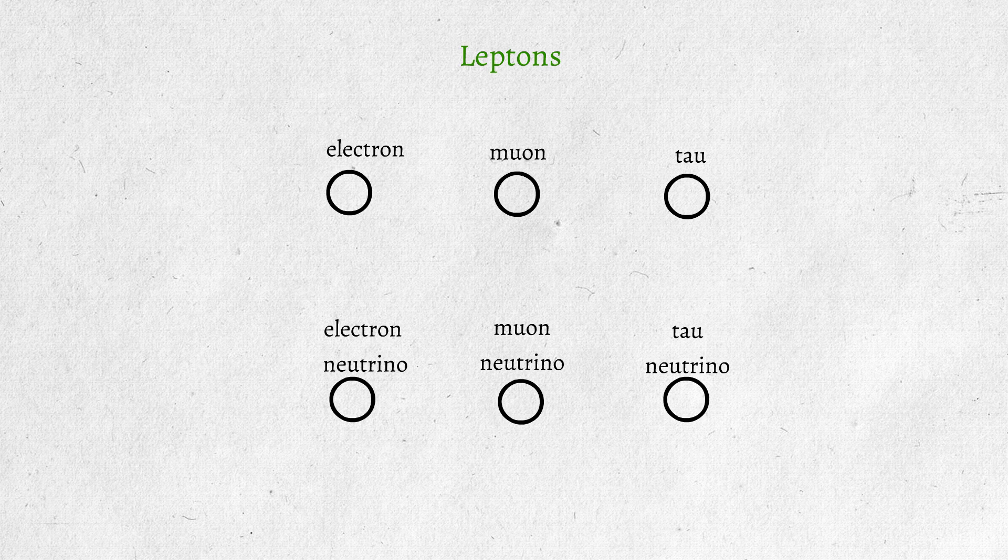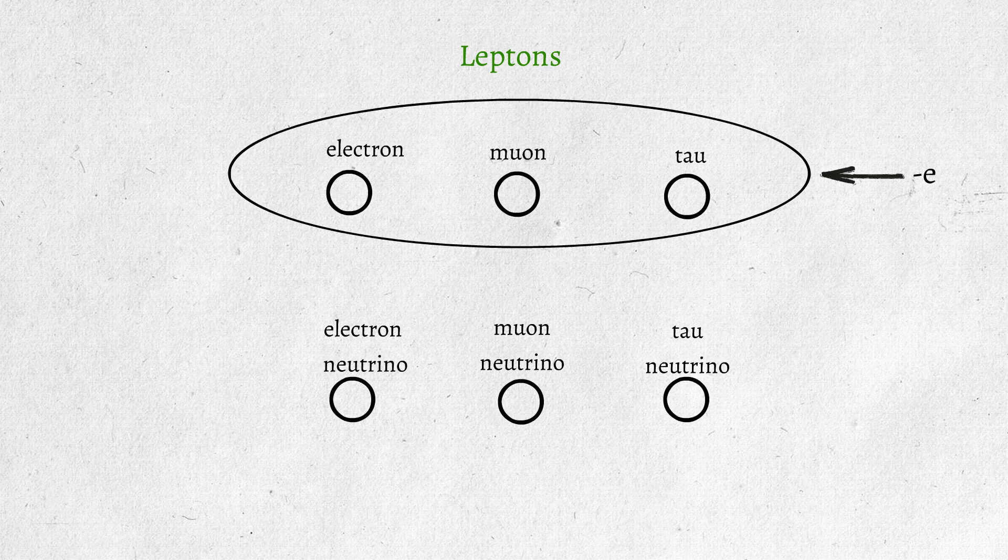Three of them are neutral, and the other three are electrically charged. The top row shows the electrically charged leptons with a charge of minus E. The bottom row shows the neutral leptons.